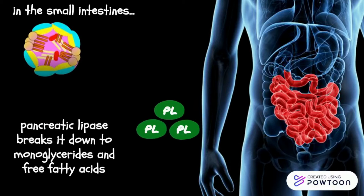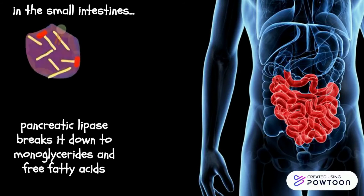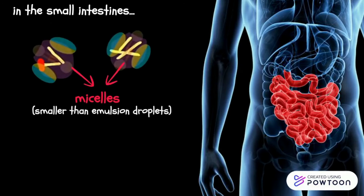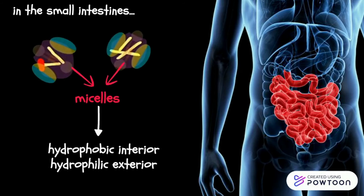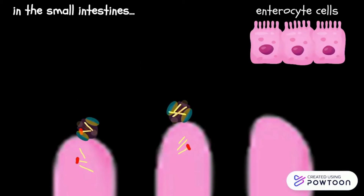The pancreas will also release an enzyme called pancreatic lipase to gain greater access to the fat, so it can be broken down into monoglyceride and free fatty acid. Bile salts then envelop the fatty acids and monoglycerides to form micelles. Micelles have a hydrophobic interior with a hydrophilic exterior.